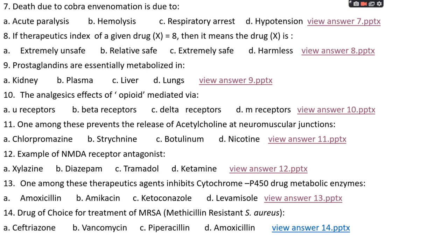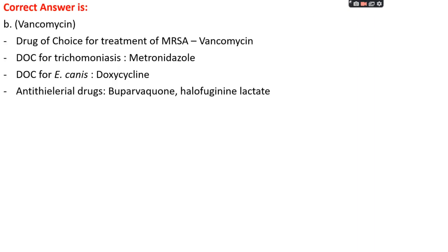Question number fourteen: the drug of choice for treatment of MRSA — methicillin-resistant Staphylococcus aureus — is option A: ceftriaxone, option B: vancomycin, option C: piperacillin, or option D: amoxicillin. The right answer is option B, vancomycin. The drug of choice for MRSA is vancomycin. The drug of choice for trichomoniasis is metronidazole; for Echinococcus, it is doxycycline. For antitherial drugs, the drug of choice is buparvaquone, and halofuginone lactate is also a drug of choice.